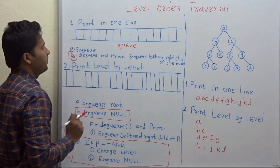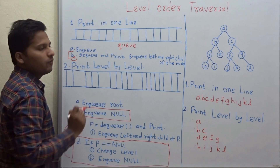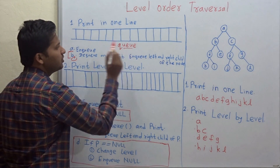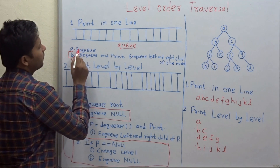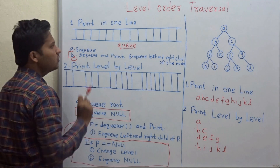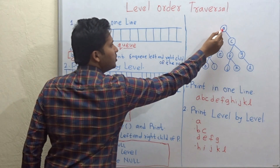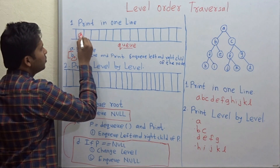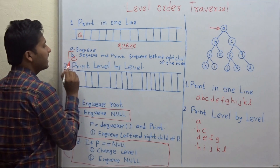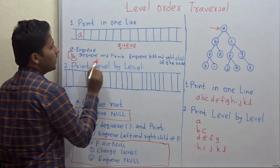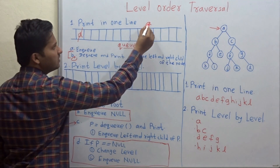Let's see the algorithm for both. First, printing in one line. For this algorithm, we are going to use the data structure Queue. These are the two steps to be followed. First step is enqueue. Whenever you are writing the program, you are given the root of the binary tree as a parameter. So we have to enqueue the root — I have enqueued node A in this queue.